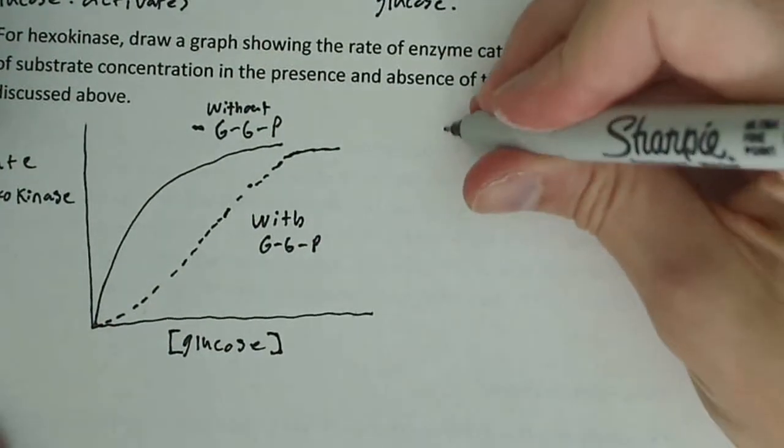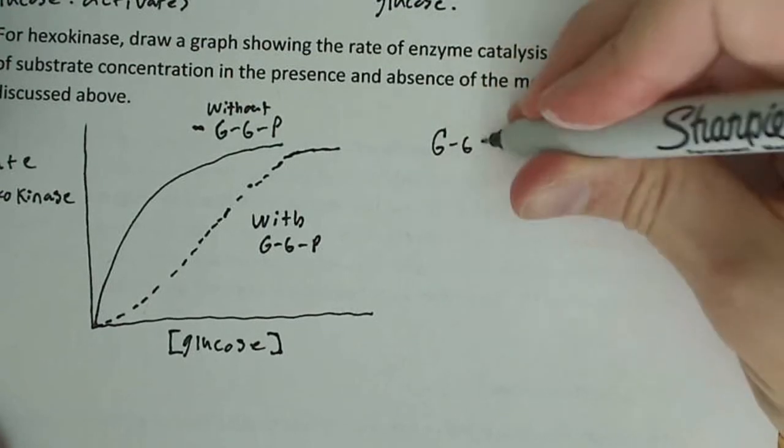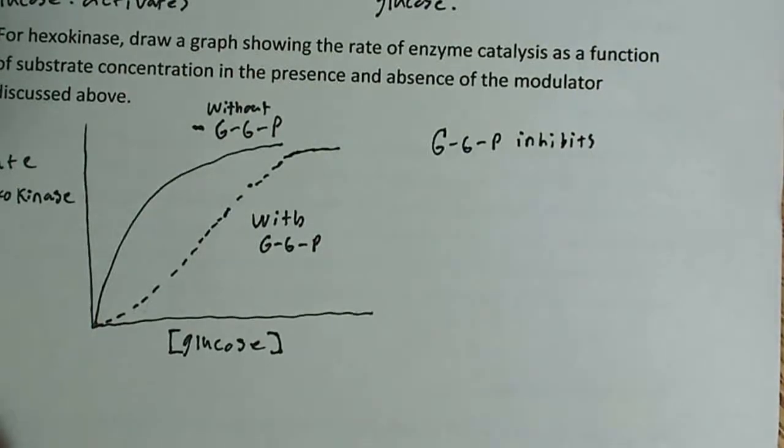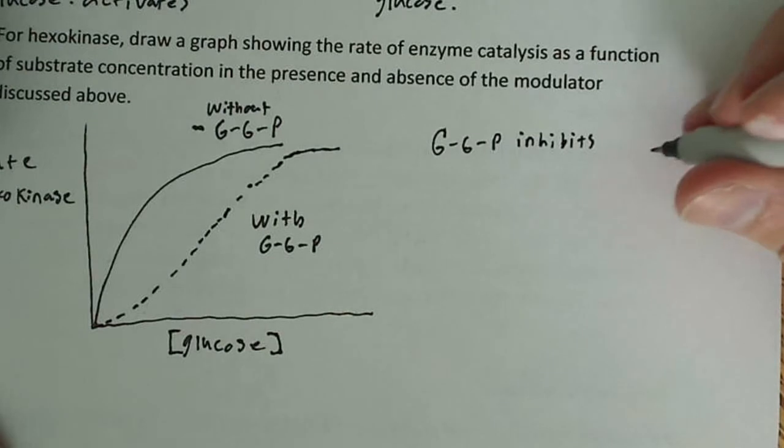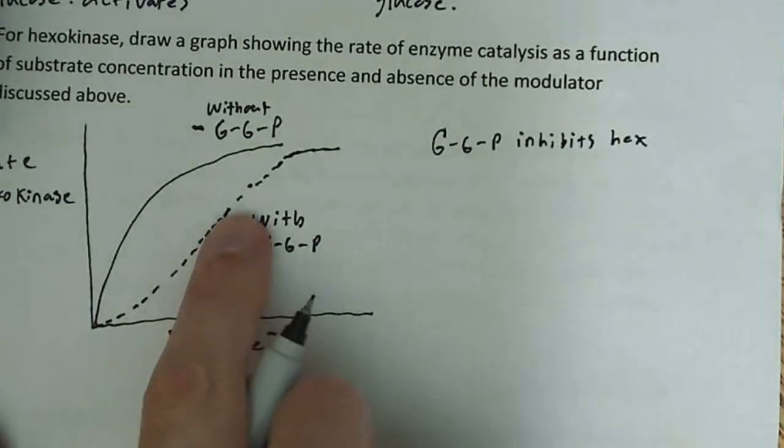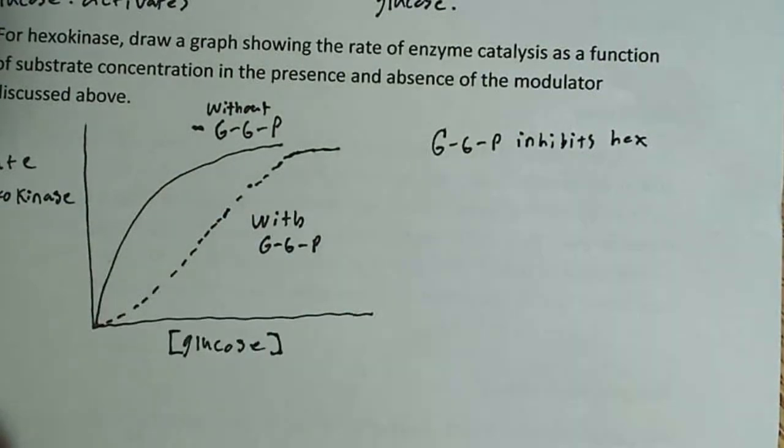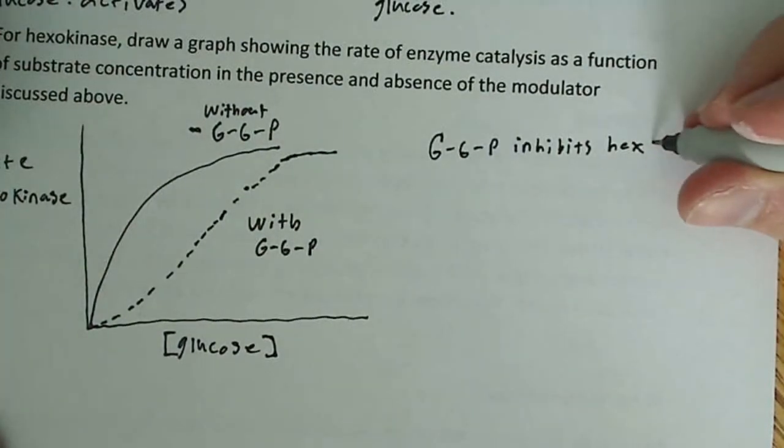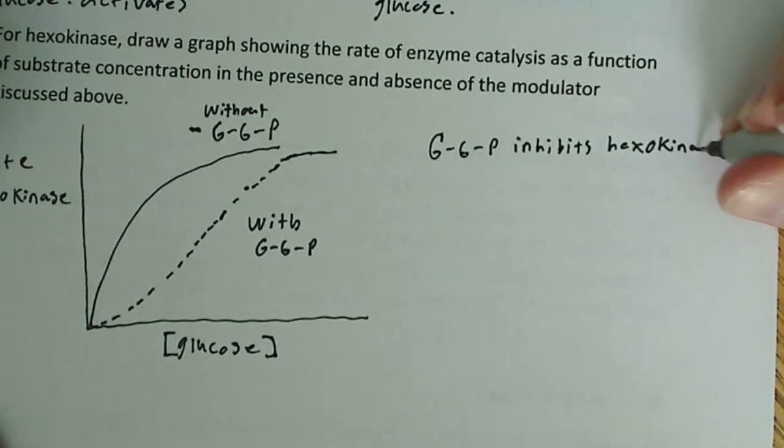And the reason for that, if you were to give an explanation for this, you'd want to say that G6P inhibits hexokinase, which essentially means it's going to take higher levels of glucose to reach the same level of activity as it would without the glucose 6-phosphate.